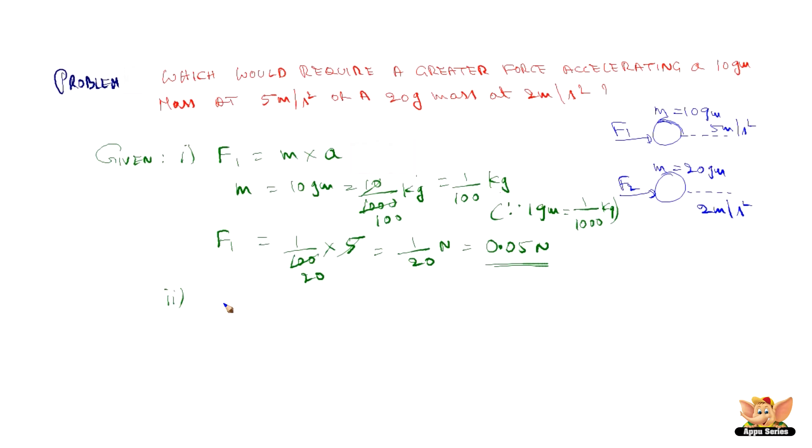In this case, we have F2 is M into A. Here again, we need to convert the 20 gram mass into kg. So 20 by 1000 kg, which is 1 by 50 kg. So F2 is 1 by 50 into acceleration, in this case 2 meter per second square. So this becomes 1 by 25 Newton, nothing but 0.04 Newton.